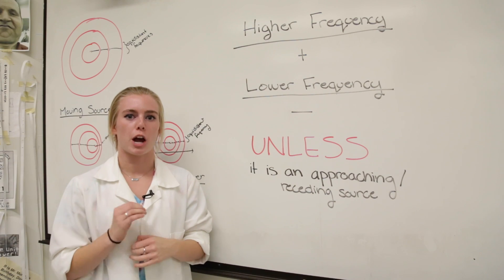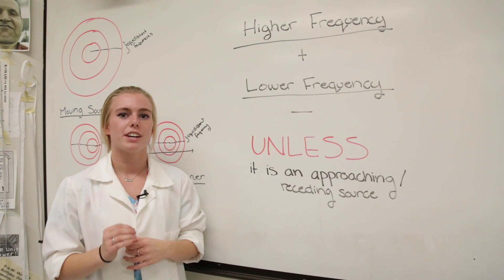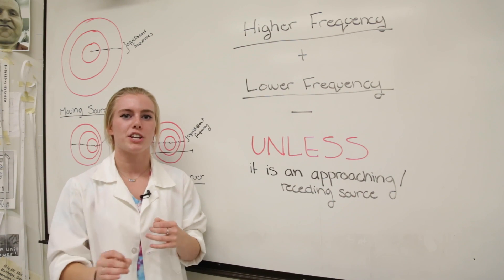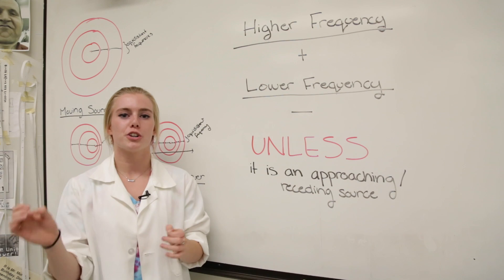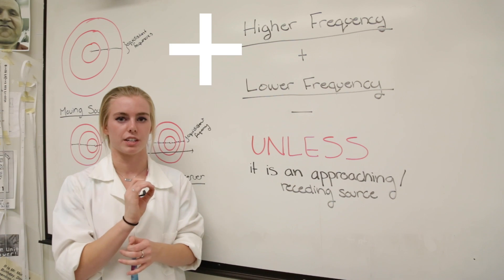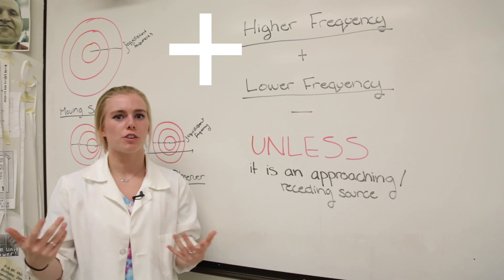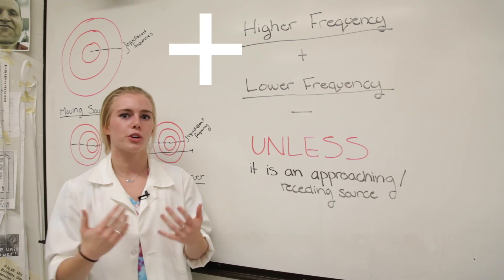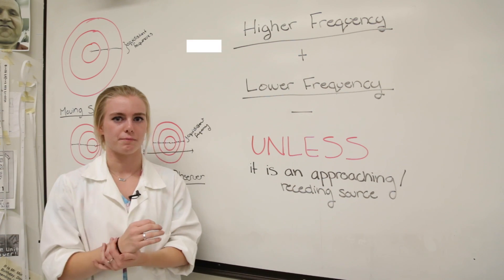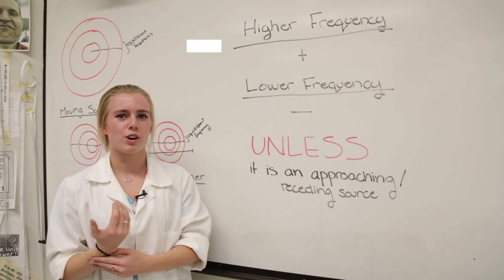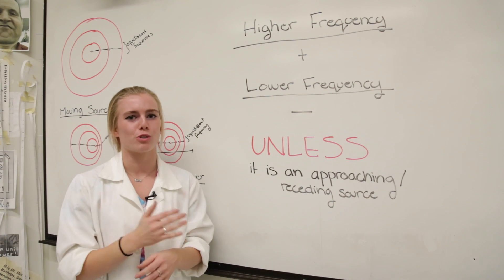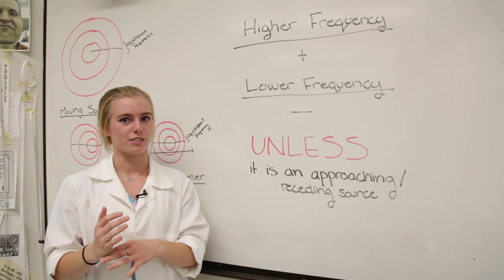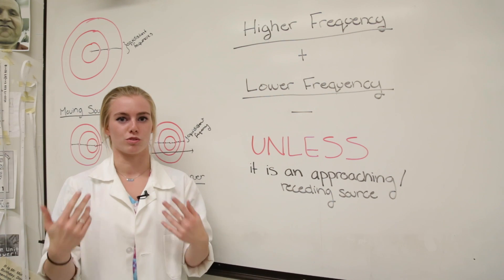A good rule of thumb for the Doppler formula is to know that when you have a higher frequency, you're going to use a positive sign. When you have a lower frequency, you're going to use a negative sign. That is, of course, unless you have an approaching or receding source, in which case it is reversed.